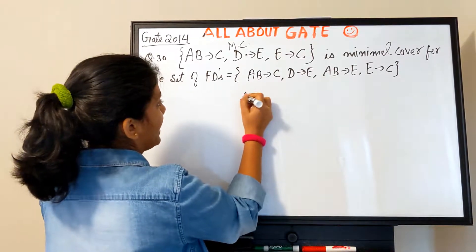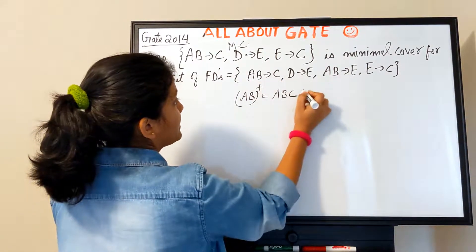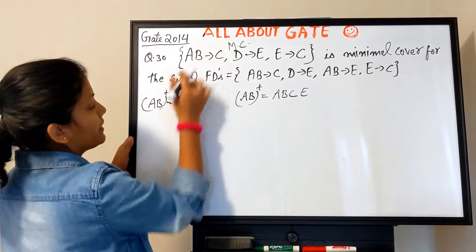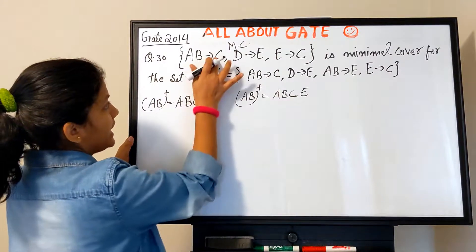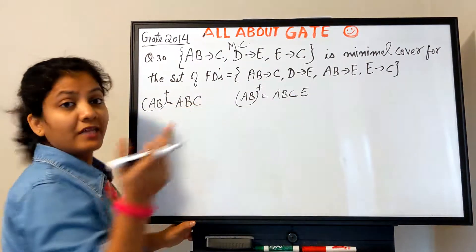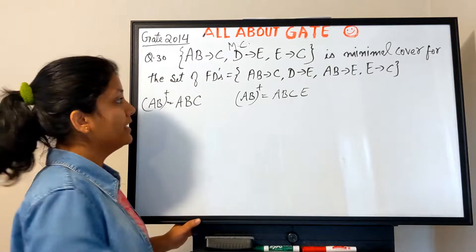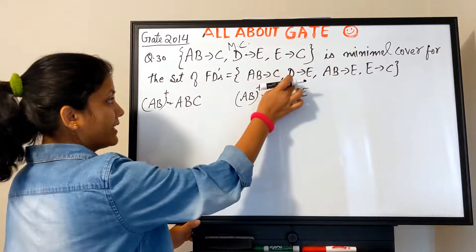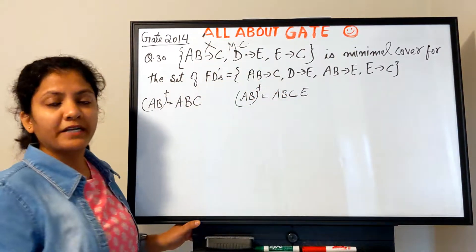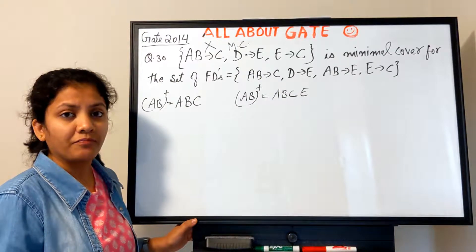Check AB in the original FD set: AB determines itself, C, and E. Now check AB⁺ in the proposed minimal cover: AB determines AB and C — but it does NOT determine E. The idea of minimal cover is that the logical implication must remain exactly the same — nothing less, nothing more. Since E is implied in the original but not in the proposed cover, this is NOT a valid minimal cover.